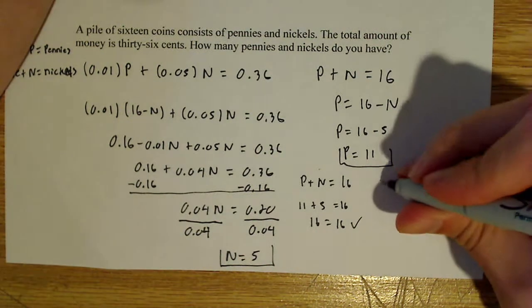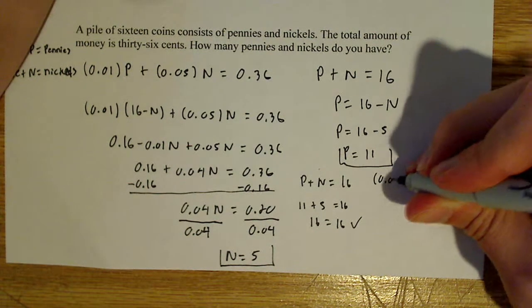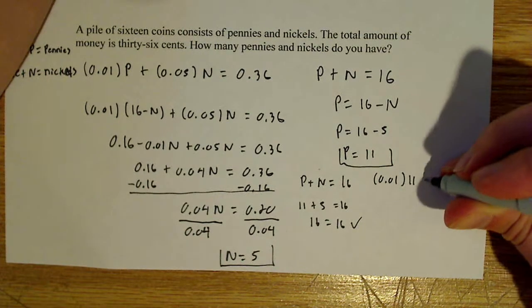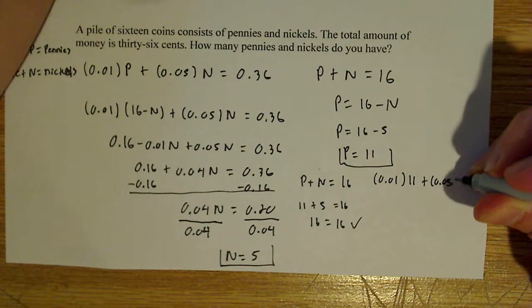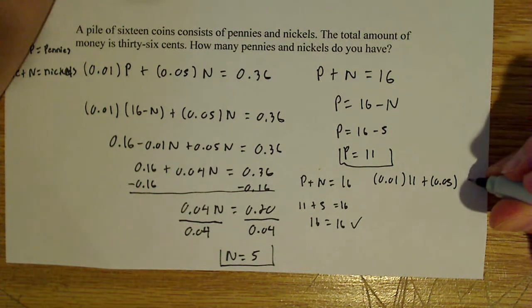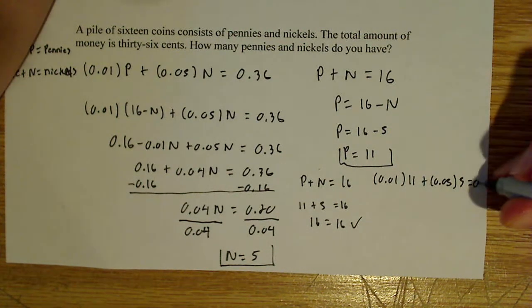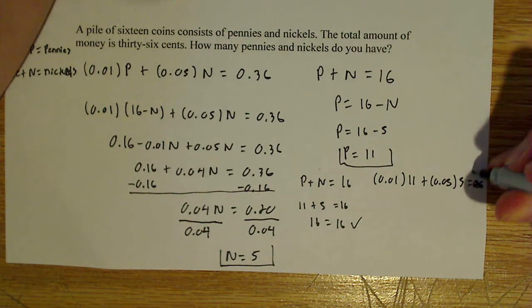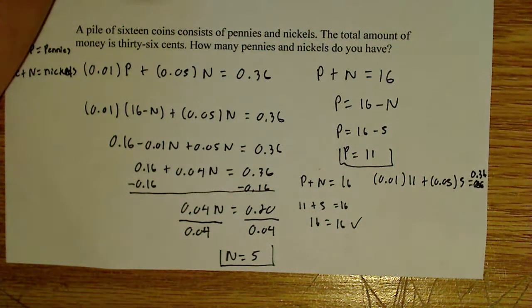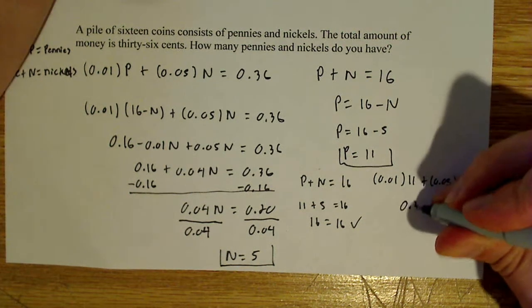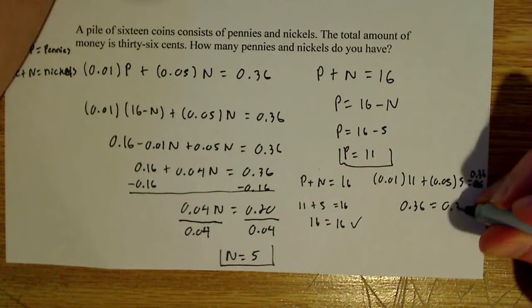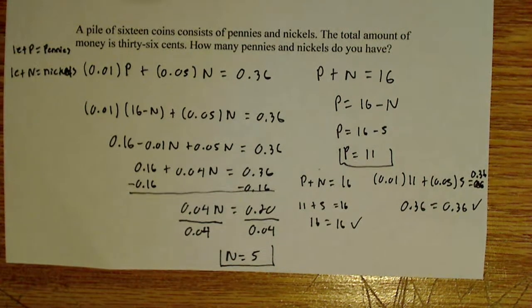So what you can do is you can take 0.01, multiply that by 11, and you can do 0.05, multiply that by 5, see if that equals 36 cents. And if you do that out right there, then you're going to find out that this indeed does equal 36 cents. So it checks out in both cases.